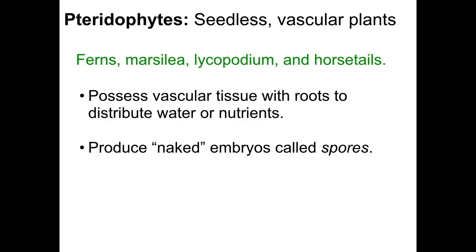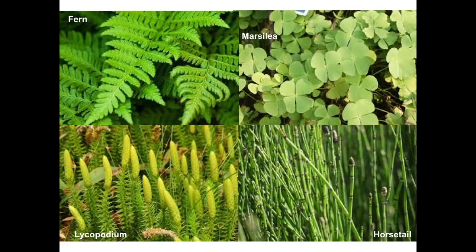The next group of plants are pteridophytes, which are seedless vascular plants. These are represented by ferns, lycopodium, and horsetails. These plants possess vascular tissue, so they can grow much taller because they have a system by which water can be circulated up through the plant and the products of photosynthesis can be circulated down through the plant. Pteridophytes still don't produce seeds, so they produce spores instead. Ferns comprise about 90% of pteridophytes. Other representatives include marsilea, sometimes called water clover — not to be mistaken with shamrocks or four-leaf clovers, which are actually flowering plants. Lycopodium is similar to ferns but has spore-producing tufts at the top. Horsetails have almost a bamboo-like appearance and produce spores at the top of their stalks.